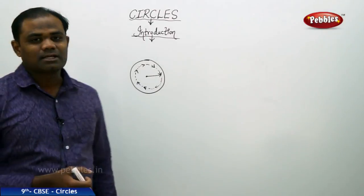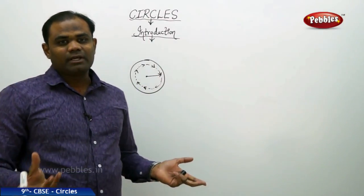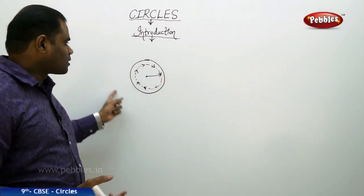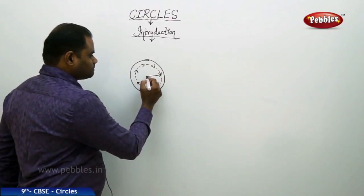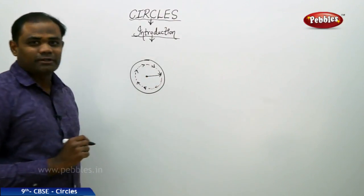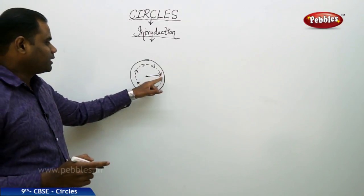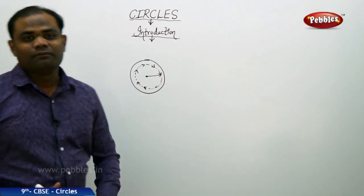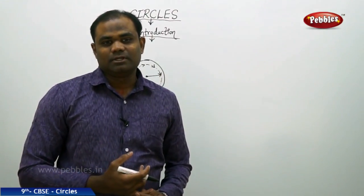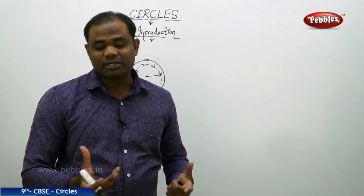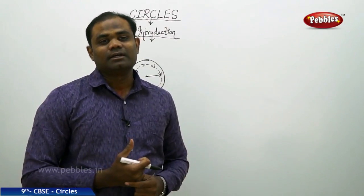So a circle is something which is formed when any object rotates round at fixed point. So any object which rotates round fixed point tries to make the outer margin which looks like a circle. That is how we define in the general sense of understanding a circle.